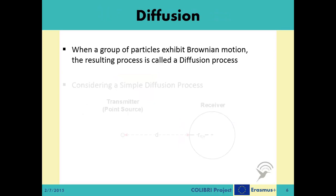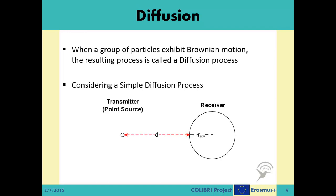While the movement of a single particle is called Brownian motion and is modeled by the Wiener process, when we consider the collective movement of a group of particles each exhibiting Brownian motion, the resulting process is called the diffusion process. A simple diffusion scenario can be defined between a single point source and a single receiver. The environment is 3D, the receiver is not moving, and the collisions among the moving objects are ignored. Lowercase d constitutes the distance between the source and the receiver, r_rcv defines the radius of the spherical receiver, and capital N defines the number of moving objects released from the source at one instance. Hereafter, we will be referring to the moving objects as messenger molecules, or MMs for short, and the point source will be called the transmitter.